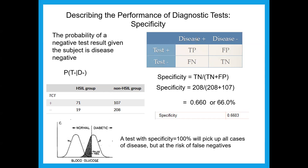Specificity is the probability of a negative test given the subject is disease-negative — P(test−|disease−). It's true negatives divided by (true negatives + false positives). Here TCT gives a specificity of about 66%, which isn't bad but you'd like to see 70%+ for better tests. At 100% specificity you correctly diagnose all non-diabetic people, but you'd tell a large proportion of truly diabetic people they don't have disease — probably more dangerous than over-diagnosing.